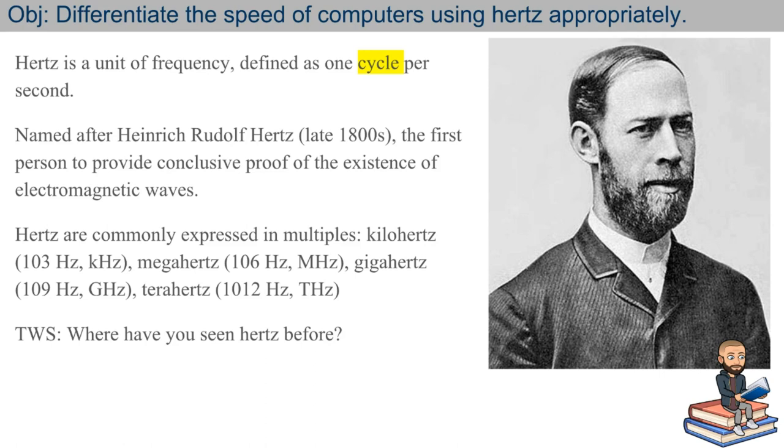A little bit of background, hertz is a unit of frequency, and it is defined as one cycle per second. The thing that's debatable is what constitutes a cycle. It was named after this guy, Henrik Rudolf Hertz. He's living around the late 1800s. He's the first person to provide conclusive proof of the existence of electromagnetic waves.